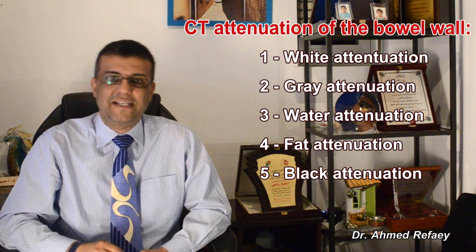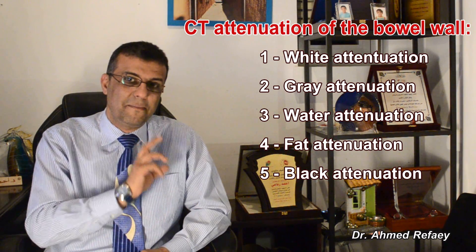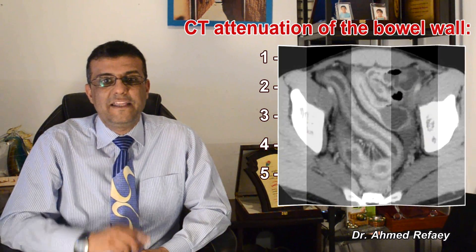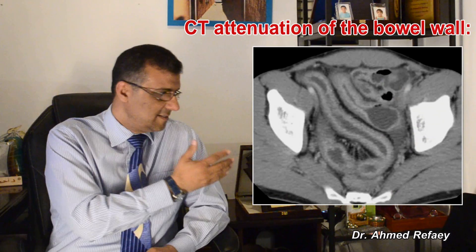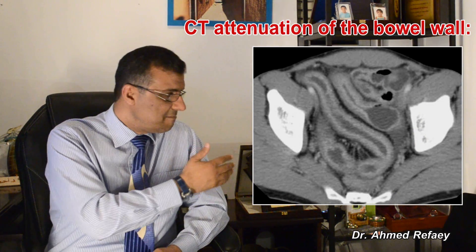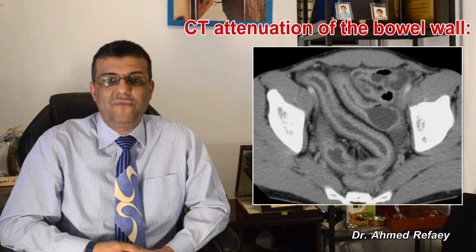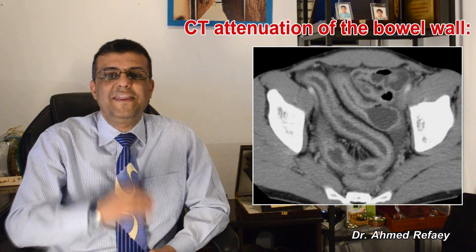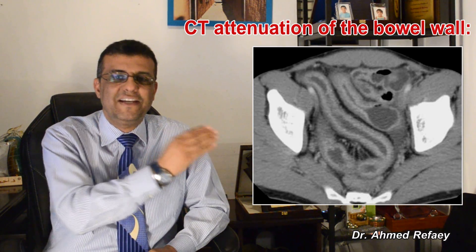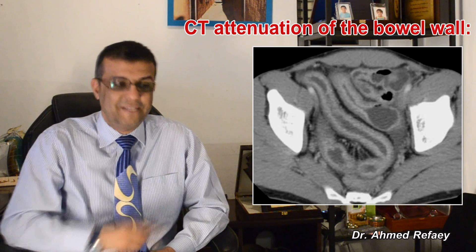The first case is a case of Crohn's disease. Here there is marked enhancement of the wall of the small bowel with the same enhancement as the adjacent external iliac vein, as you see. The second case is a case of ulcerative colitis, showing thickening and enhancement of the wall of the rectosigmoid to the same attenuation as the external iliac vein.